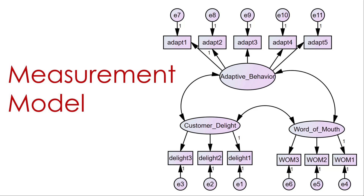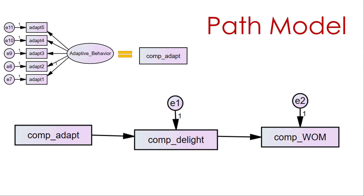The next model you might encounter is the path model. Once you've established your measurement properties, now you're looking to determine what we call structural paths — paths between constructs. We're not looking within anymore; now we're looking across constructs to say does one construct influence another.